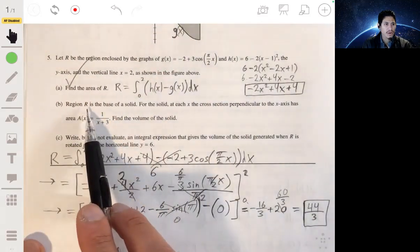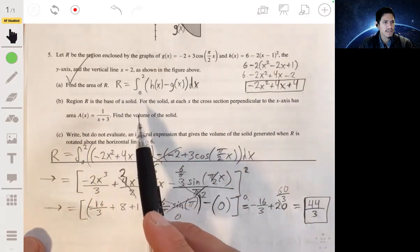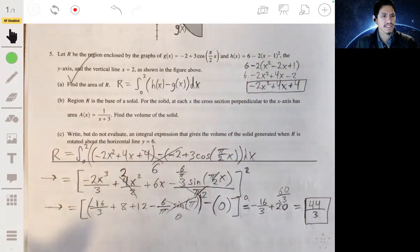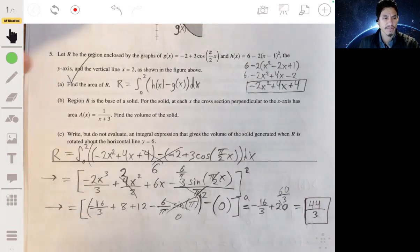Alright, part B. Region R is the base of a solid, for the solid at each x, the cross-section perpendicular to the x-axis has an area of 1/(x + 3), find the volume of the solid.